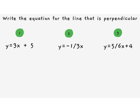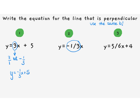We have several equations and we're going to write the equation for the perpendicular line using the same b. The slope is three over one and it's positive, so the negative reciprocal will be negative one-third. The perpendicular line: y equals negative one-third x plus 5. Next: our slope is negative one-third, so the negative reciprocal is three over one. There is no y-intercept because it goes to the origin, so y equals 3x.